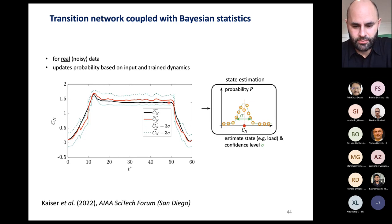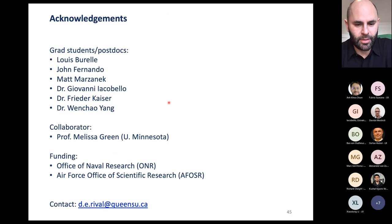But let me wrap up just by acknowledging all the students and researchers who have been working on these topics. Giovanni is now a lecturer at University of Surrey. Many of my students have moved on to greener pastures. And my collaborator on the delta wing research is now at University of Minnesota. I don't know if anyone knows Melissa. She does a lot of work on LCS and things like that. And of course, the funding for these various projects. And feel free to reach out to me if you have specific questions after. So, with that, I'll take any questions.